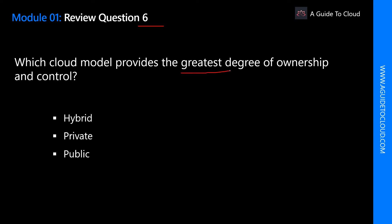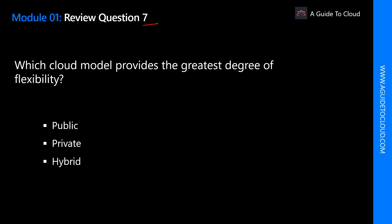Question 6: Which cloud model provides the greatest degree of ownership and control? Hybrid is not correct because with hybrid you work with both a private and a public cloud, so you don't have the greatest degree of control in the public cloud space. Public cloud is definitely not correct because you are ultimately relying upon the services provided by your cloud provider. The right answer is private cloud — private cloud provides the greatest degree of ownership and control.